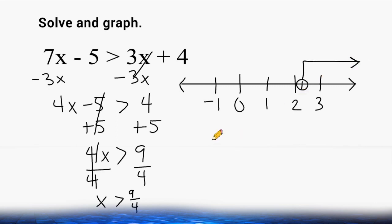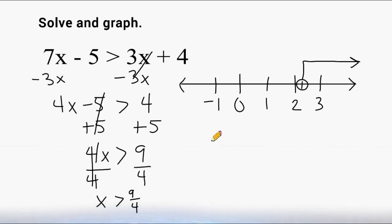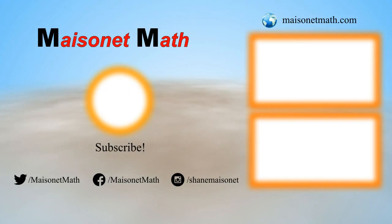So I just showed three examples of how you can solve inequalities. A couple of things to remember: if you're ever isolating your variable and you have to multiply or divide by a negative number, you must reverse the order of your sign. Also, if your symbol has an equal to as part of the solution, make sure that you shade in the circle.